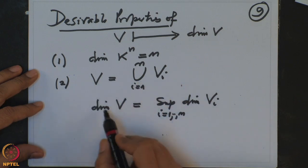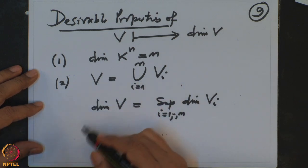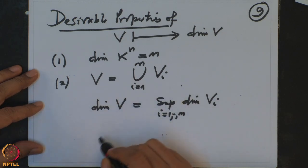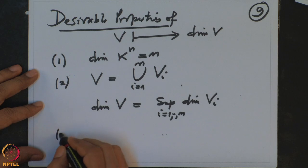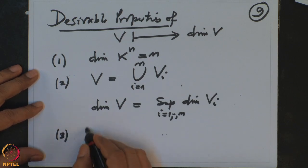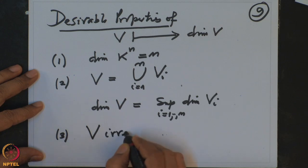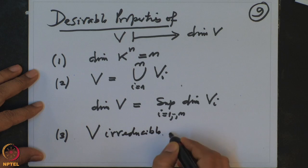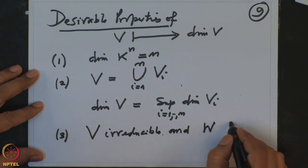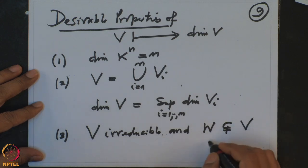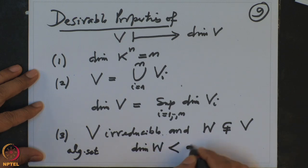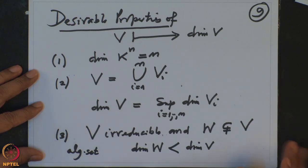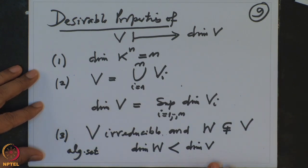Property 2: if V is a finite union of closed sets V_i (i from 1 to n), then dim(V) should equal the supremum of dim(V_i). For instance, a union of lines should have dimension 1, since each line has dimension 1. This reflects the thinking that finitely many points cannot become a curve.